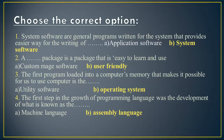Fourth one: the first step in the growth of programming language was the development of what is known as blank. Option A is machine language and option B is assembly language. So option B, assembly language, is correct.